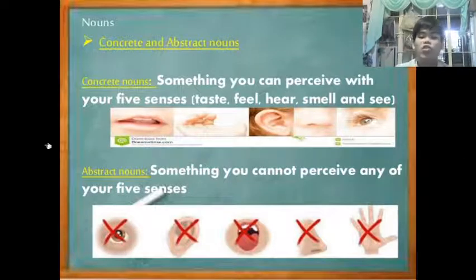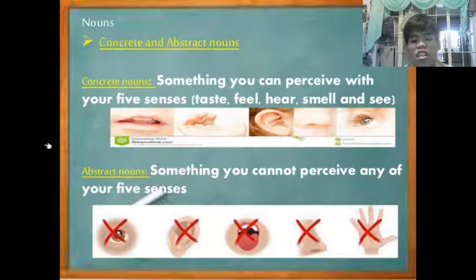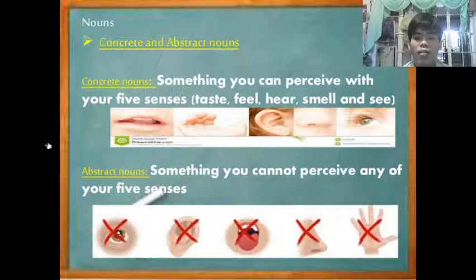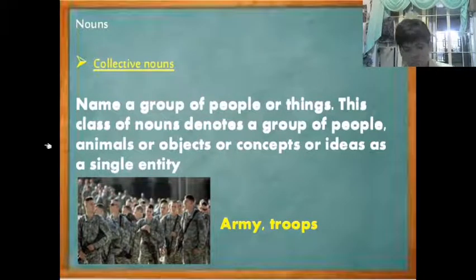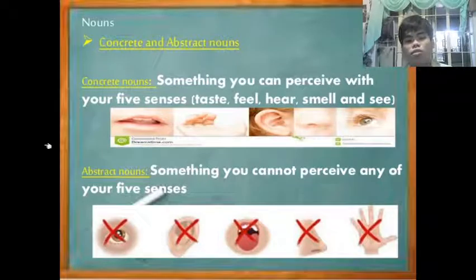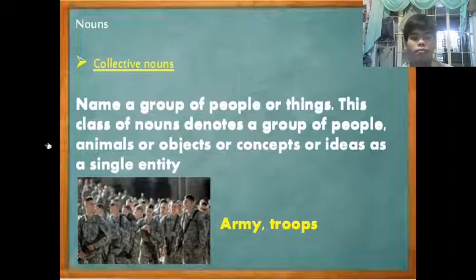Next are concrete and abstract nouns. Concrete nouns are nouns that you can perceive with your senses — you can see, hear, smell, taste, and feel them. Abstract nouns are the opposite — these are nouns that cannot be seen or sensed by our five senses. Examples of concrete nouns: pencil, table, ladder, chair. Examples of abstract nouns: freedom, hate, anger, wrath.